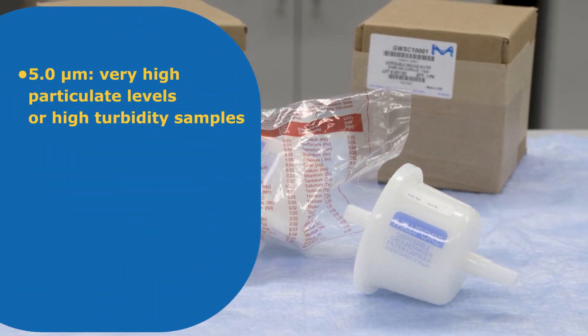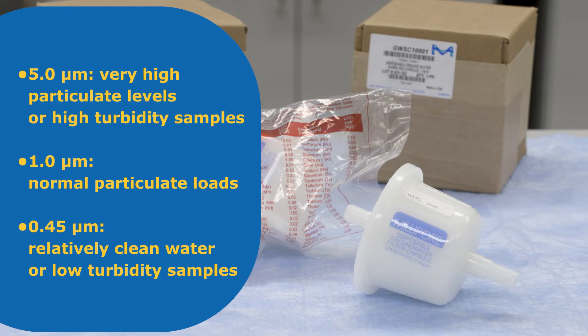Use the 5 micron pore size when particulate levels are very high or have high turbidity, the 1 micron pore size for nominal particulate loads, and the 0.45 micron pore size for sampling relatively clean water or low turbidity to retain non-dissolved particles.